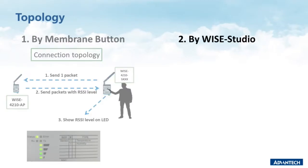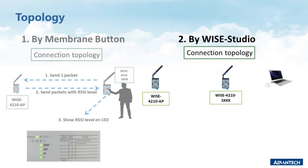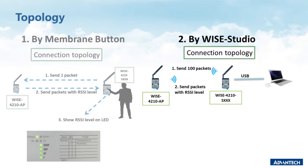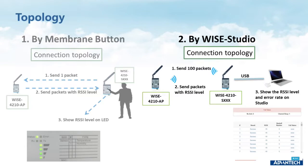The second method is by WISE Studio utility. Its topology is shown below and the operation is performed in WISE Studio. Therefore, the user needs to connect WISE42108P to a PC. WISE42108P will send multiple packets to the AP, and the number of packets is adjustable. After the AP receives the packets, it will send echo packets with SSI level back to WISE42108P. The side survey result will be shown in WISE Studio, including error rate, SSI value, and so on.